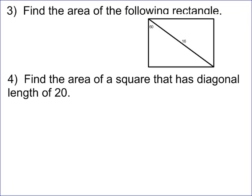This one asks for the area of a rectangle. In a rectangle you just need the two sides. Since it's a rectangle, these must be right angles, and I give you a 60-degree angle, which means the other must be 30. This is similar to example one: you're given the hypotenuse, the short leg is half — that's 8 — and then multiply the short leg by √3 to get the long leg, 8√3. The area of a rectangle is length times width, so 8 times 8√3 equals 64√3.